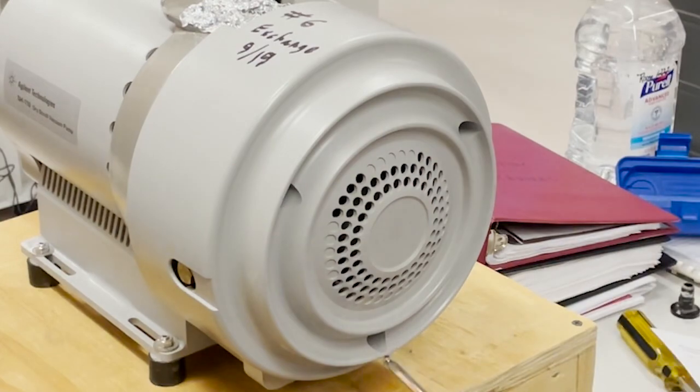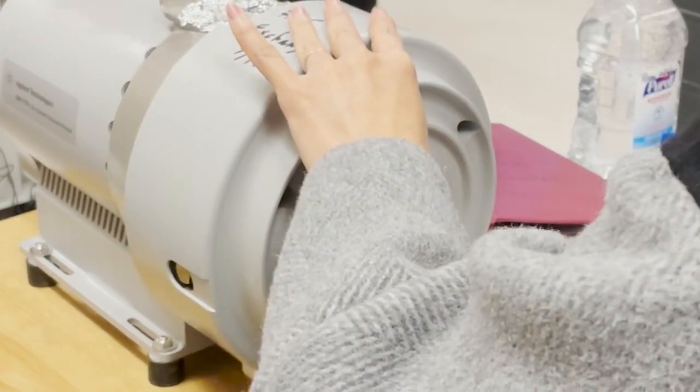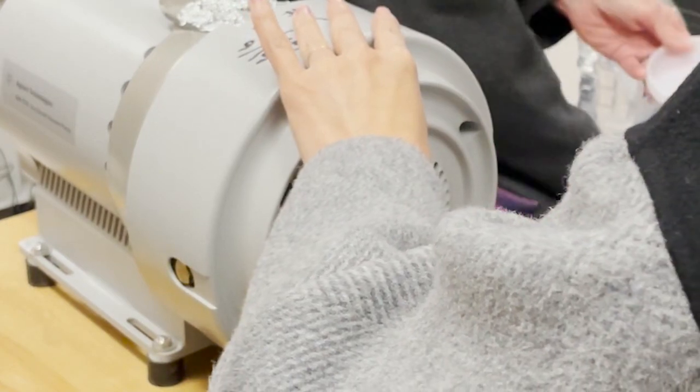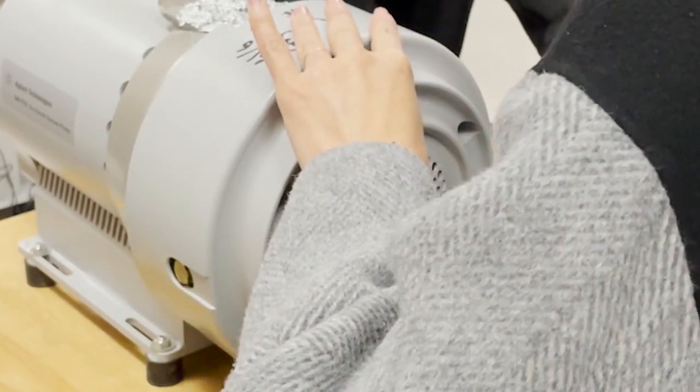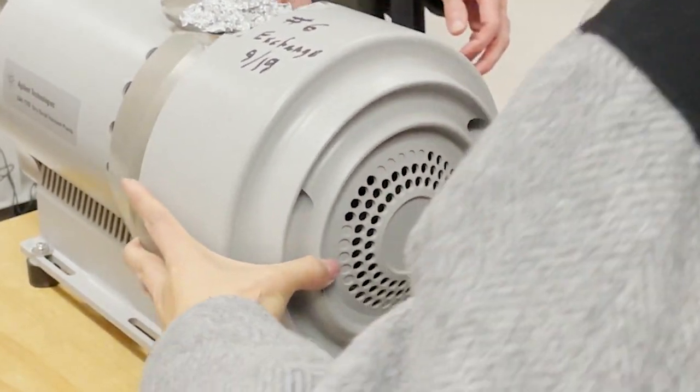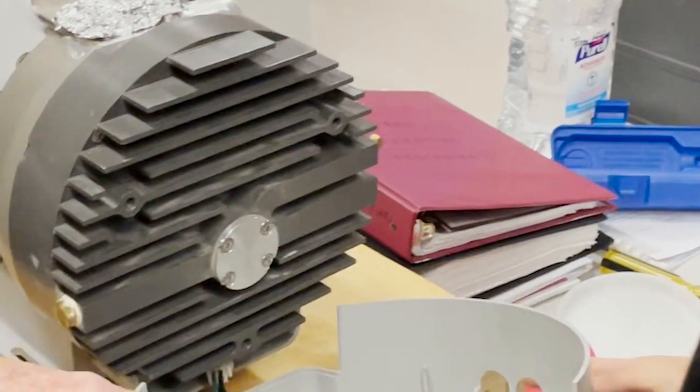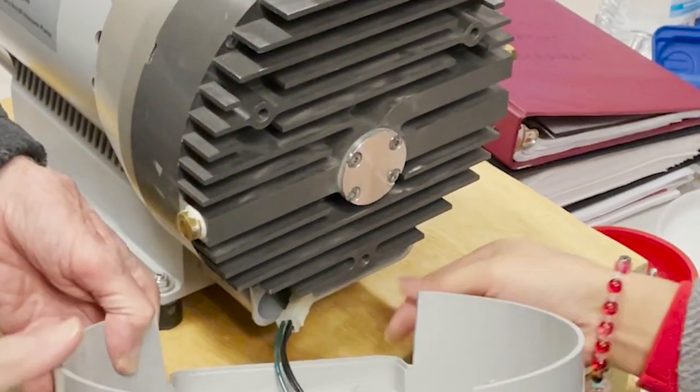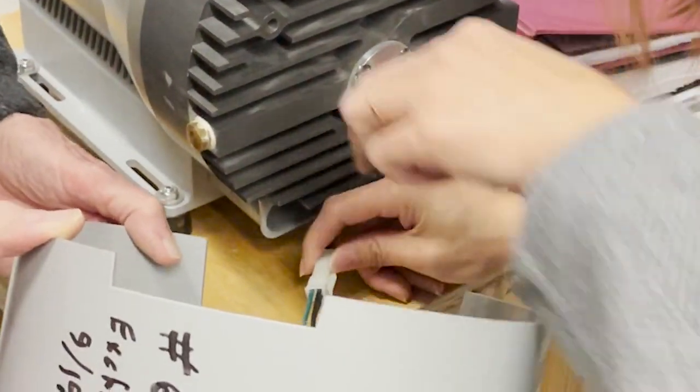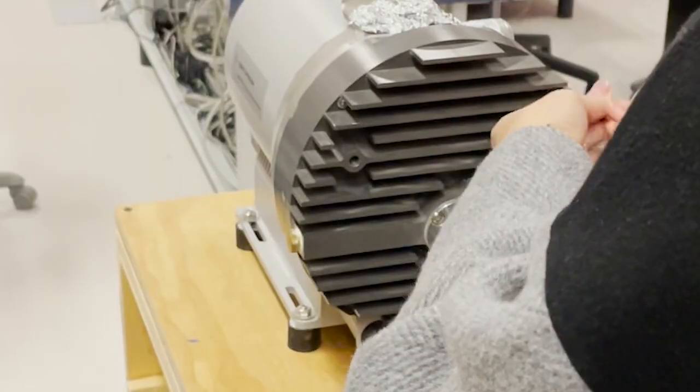Once that's removed, you'll see that there is a power connector to the fan. And if you squeeze the clips, you can remove that, and that removes the cowling completely.